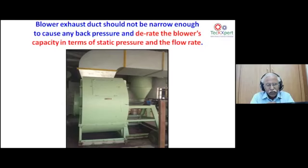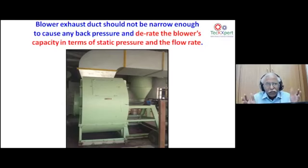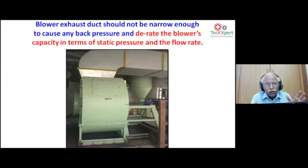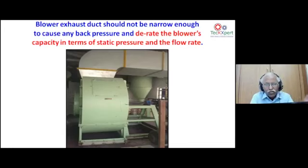Instead, expand the exhaust duct — if it's 2×2 feet, make it 2×3 feet — and take it outside in a way that back pressure is not allowed to increase. During operation, keep back pressure at a minimum so that the full static pressure — both velocity pressure and total static pressure — is utilized in the existing system.